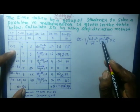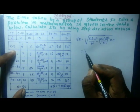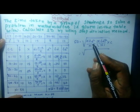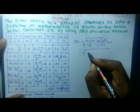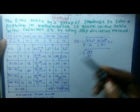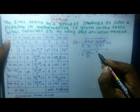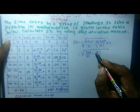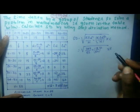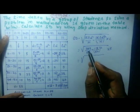Now substitute into the formula: SD = √[ (Σfd²/n) − (Σfd/n)² ] × c. Substituting: Σfd²=344, n=50, Σfd=8, c=5. So SD = √[ (344/50) − (8/50)² ] × 5.